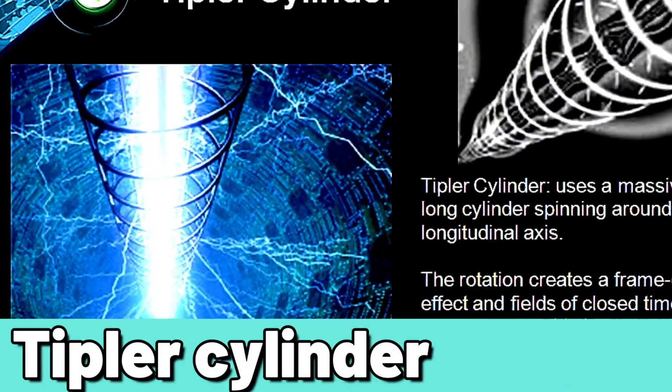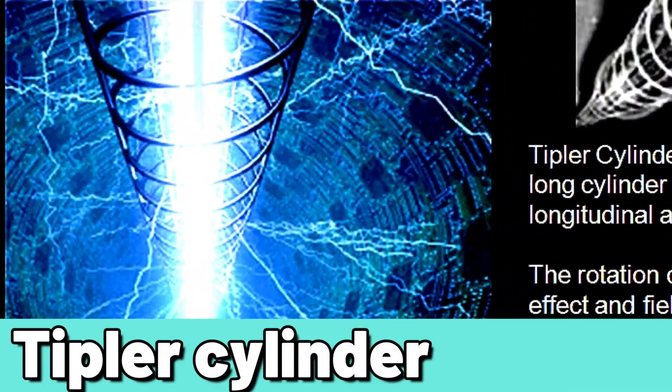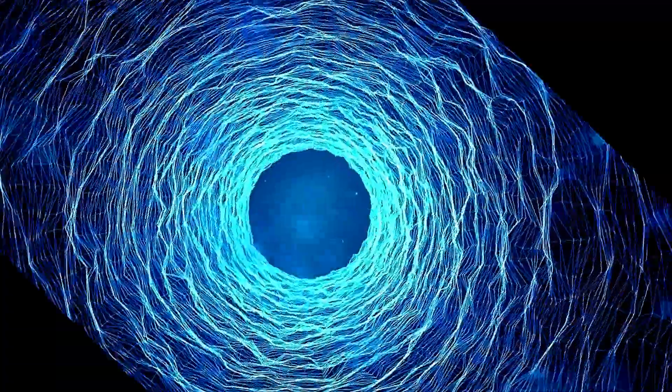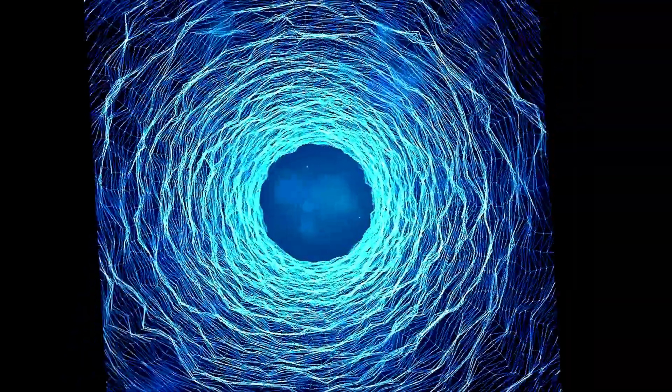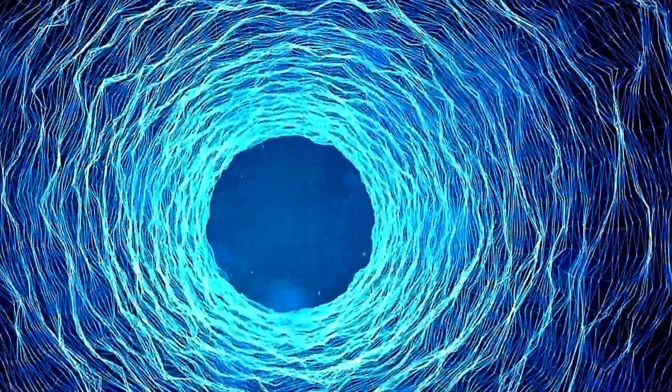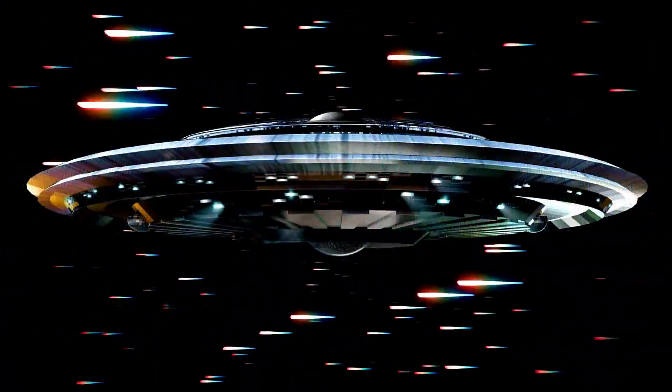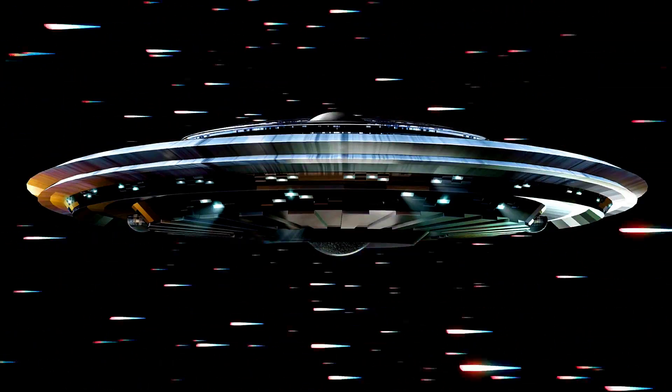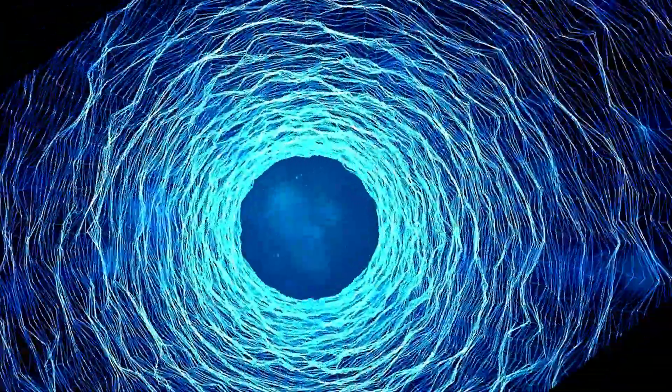The Tipler cylinder is a hypothetical object that involves a dense spinning cylinder that could potentially allow time travel. If a cylinder is infinitely long and spins fast enough about its long axis, then a spaceship flying around the cylinder on a spiral path could travel back in time, or forward, depending on the direction of its spiral.